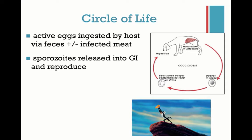So the sporozoites are released into the GI system here, and that's where they mature and reproduce, and that's where they cause the clinical illness that we see — the diarrhea. So once they reproduce, it causes the cells to die, and as some of the cells of the GI system die off, that's what causes the diarrhea.